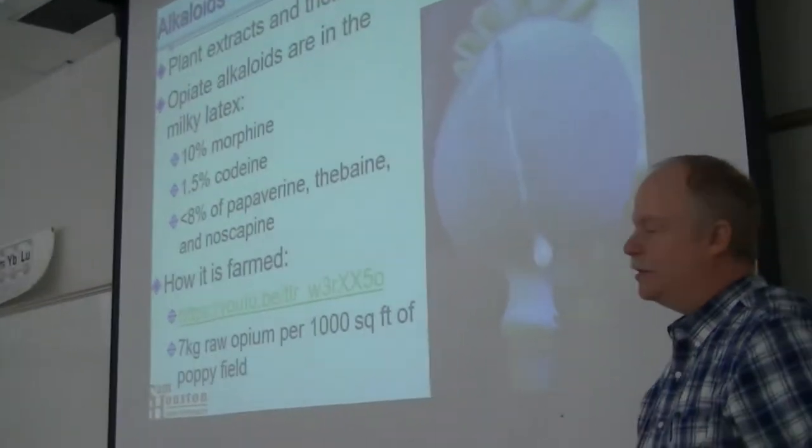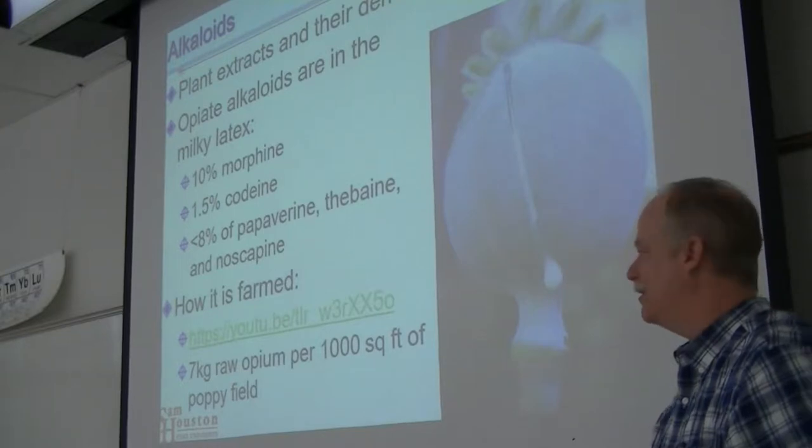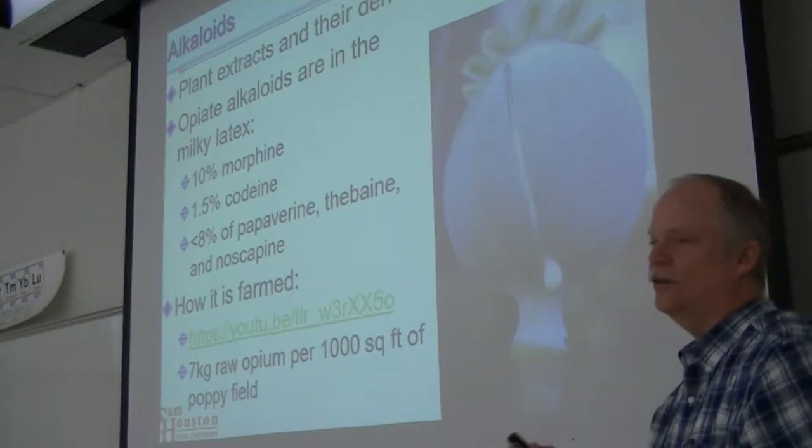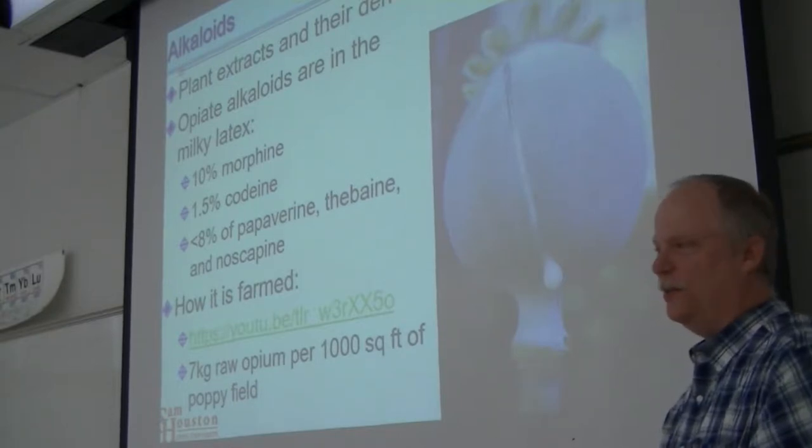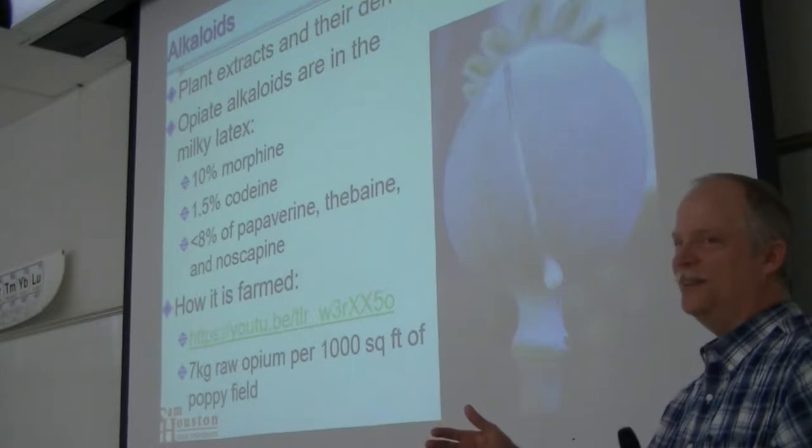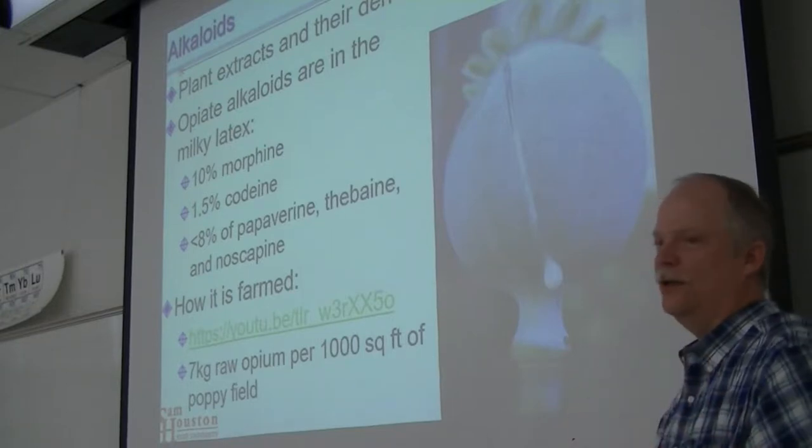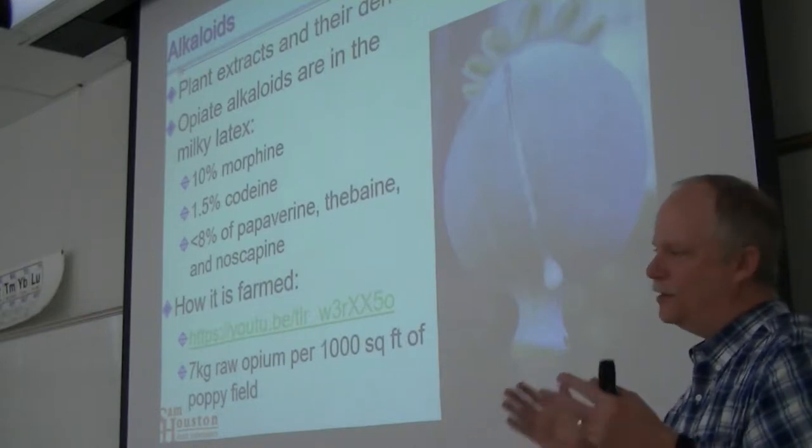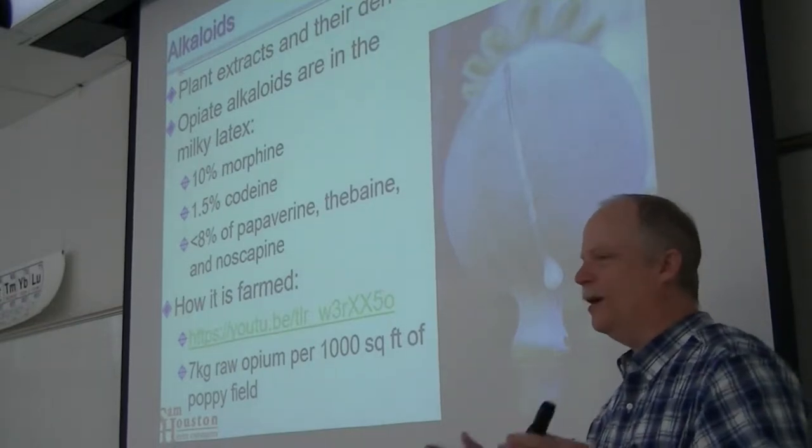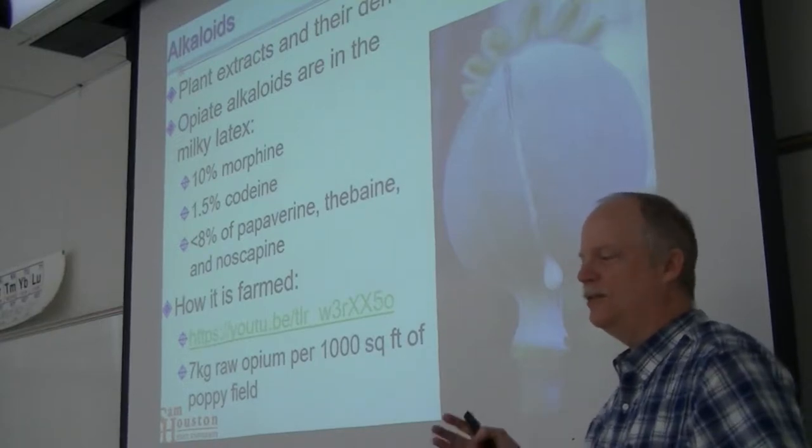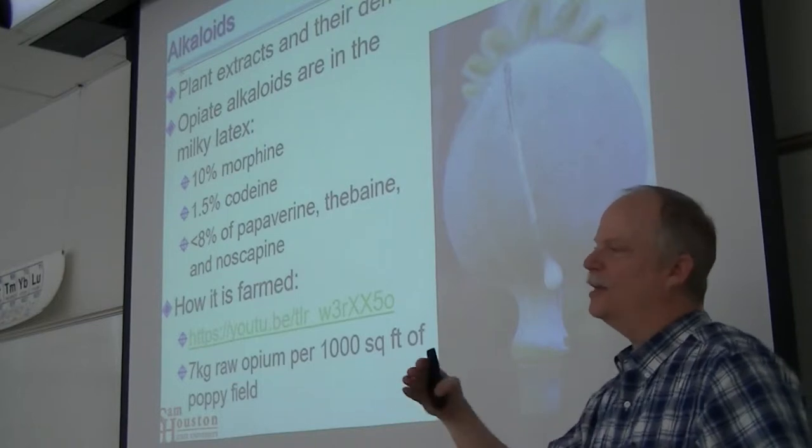It's pretty amazing - seven kilograms of raw opium per thousand square feet of poppy field. It's a labor-intensive process, but they have folks that go out into the fields to harvest this. There's quality control to keep them from pocketing some and selling it on the black market. Somewhere this stuff gets turned into black market heroin.